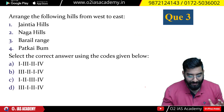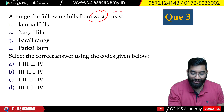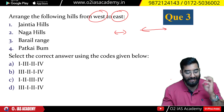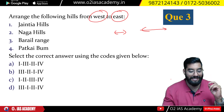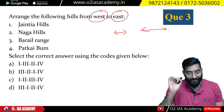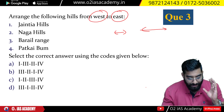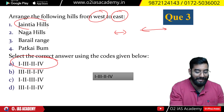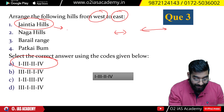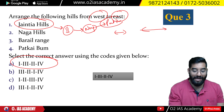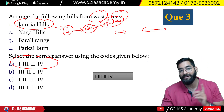Question number 3: Arrange the following hills from west to east — Jaintia Hills, Naga Hills, Barail Range, and Patkai Bum ranges. Pause the video and give your answer. The answer is: Jaintia Hills first, then Barail Ranges, then Naga Ranges, and finally Patkai Bum. This is the correct chronological order from west to east.